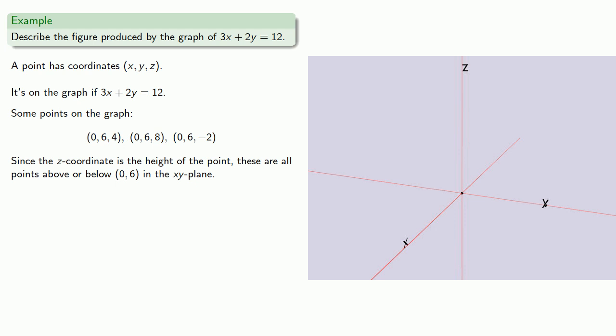And let's think about this a little bit more. Since the z coordinate is the height of the point, all of these points we've found are above or below what we might call 0, 6 in the xy plane. So if we want to graph these, let's go to 0, 6, then go up or down by differing amounts. So we can go to 0, 6 and then up 4, or again to 0, 6 and then up 8, or to 0, 6 and then down 2. And really we could go to 0, 6 and any distance above or below. And so what we actually get is a straight line through this point 0, 6 in the xy plane.